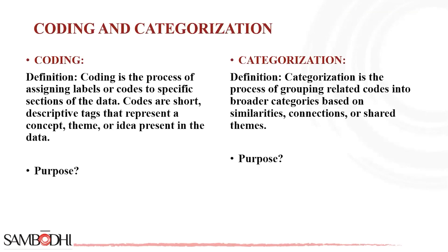Coding and categorization are important processes in qualitative data analysis. They involve organizing and making sense of the data by systematically labeling and grouping segments of information into meaningful categories or codes. These processes are used in various qualitative research methods such as thematic analysis, content analysis and grounded theory.